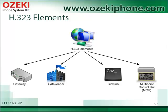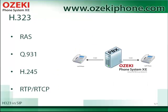Between the gatekeeper and the terminal, there is a permanent TCP connection that requires a reliable and fast internet connection. An H.323 call can use the RAS, Q.931, H.245 and RTP protocols.